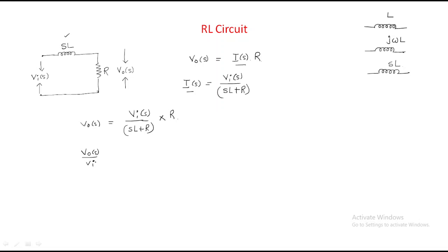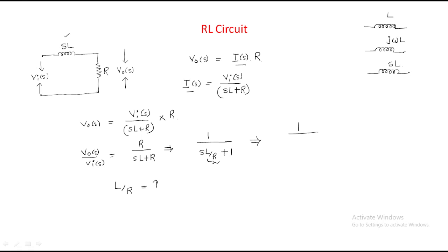From this we can write V_out(s) divided by V_i(s) equals R divided by (sL + R). Now divide by R and you get 1 divided by (sL/R + 1). Replace L/R with τ — τ is nothing but the time constant. So this equation becomes 1 divided by (sτ + 1).